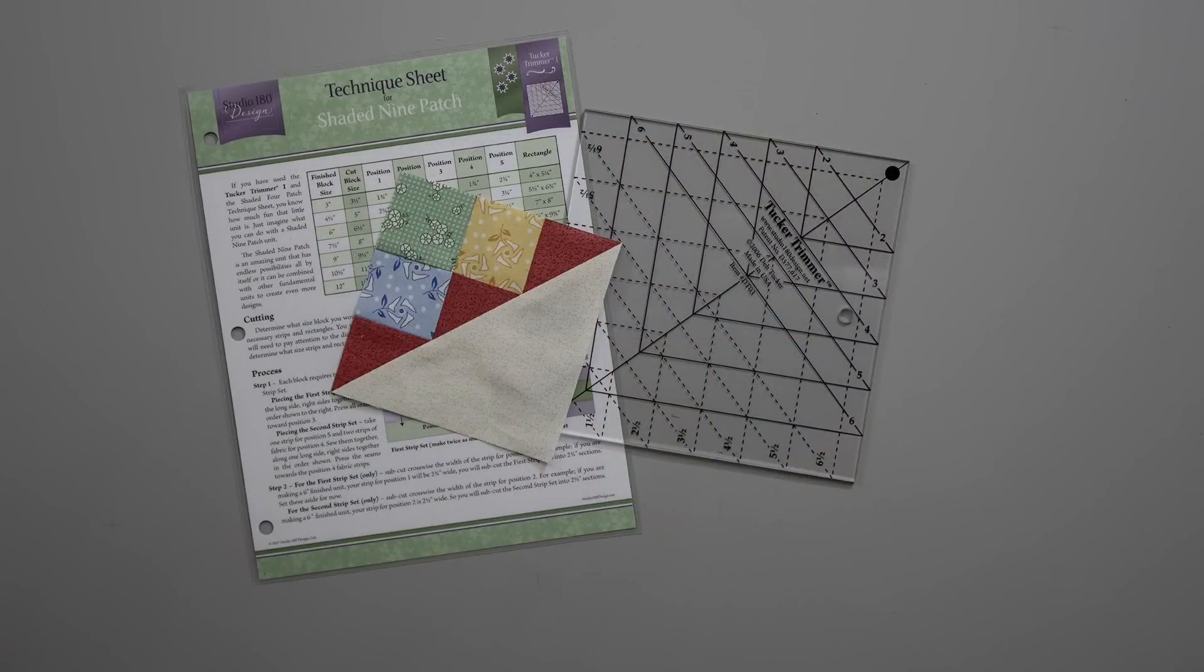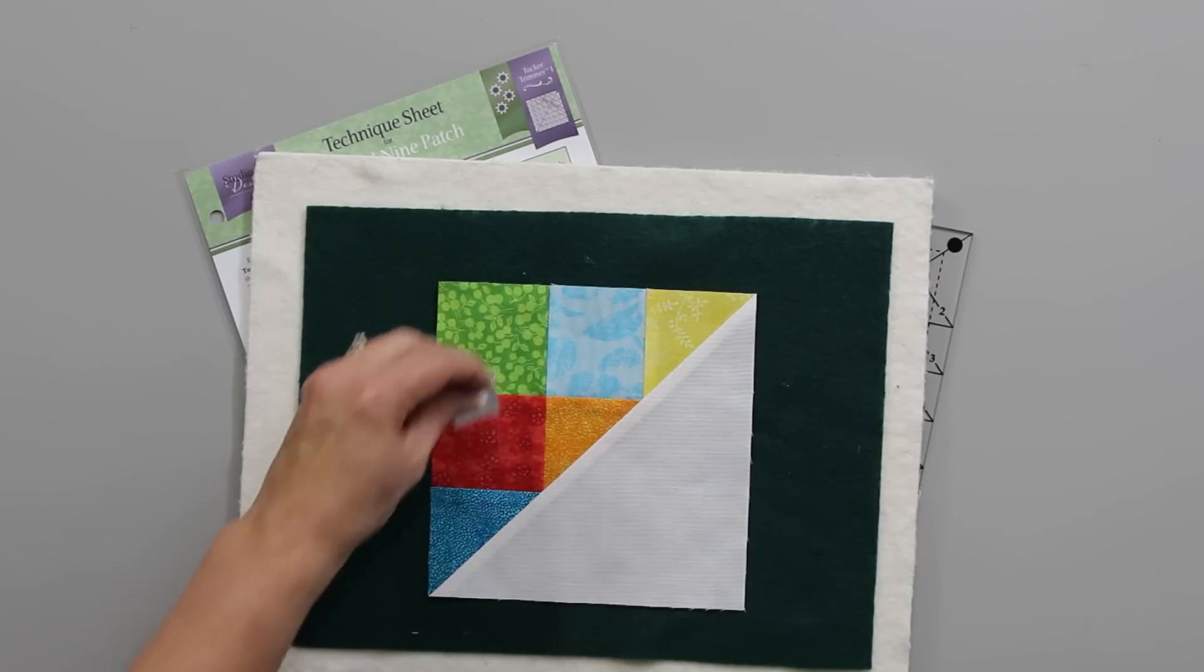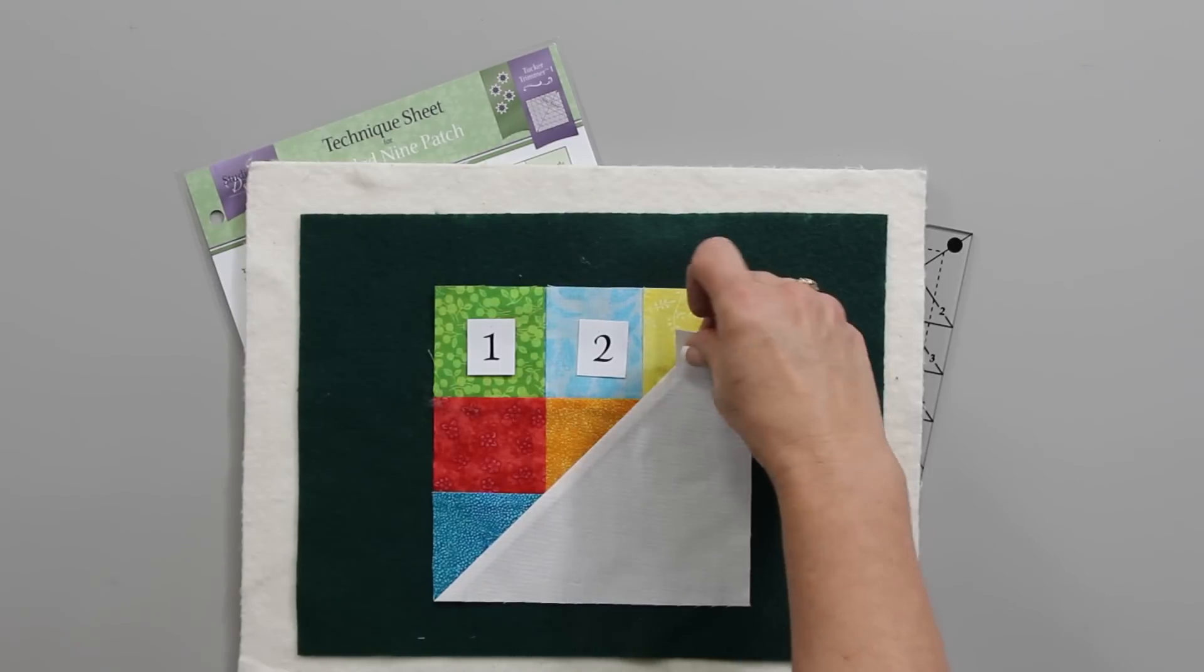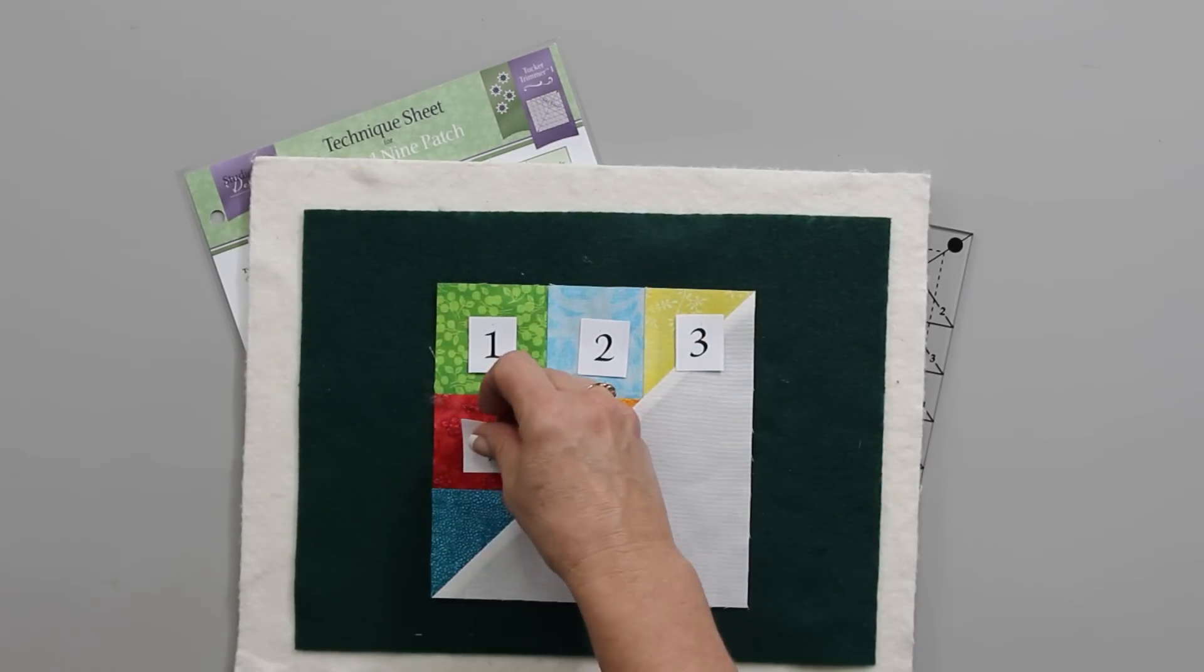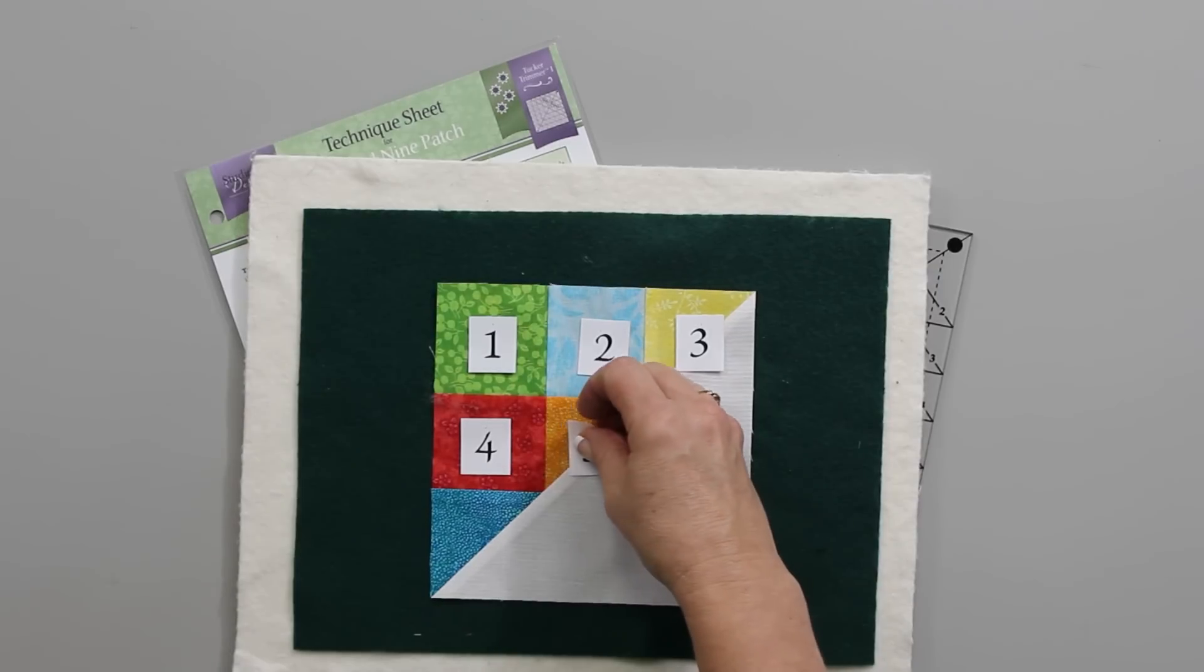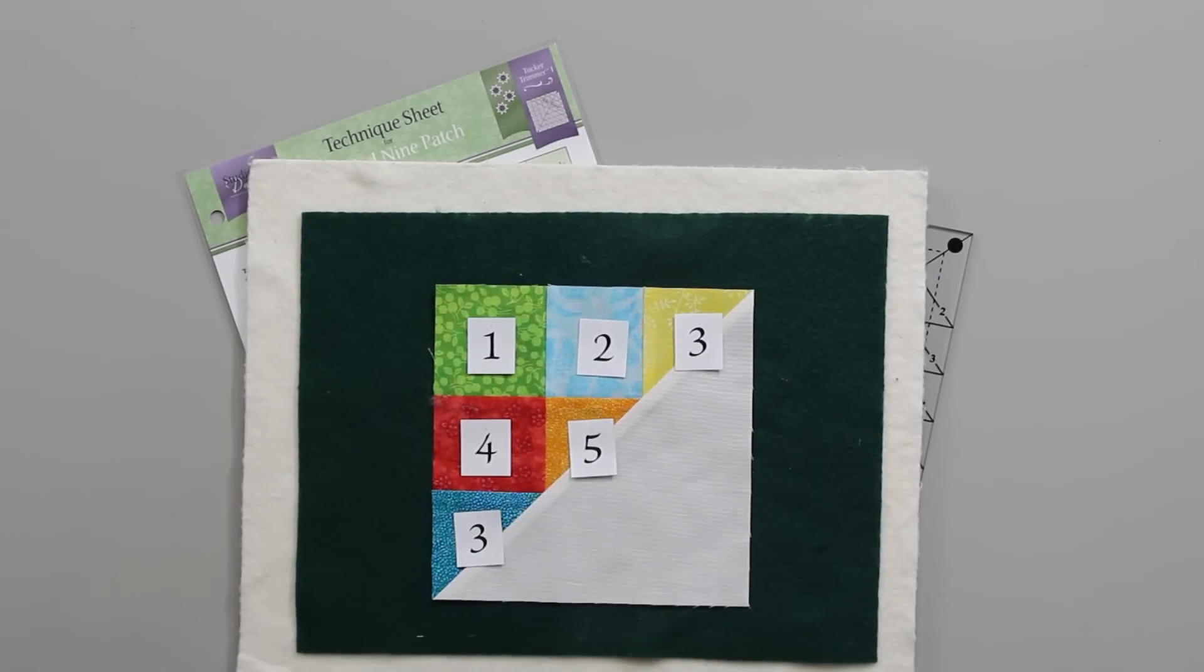The technique sheet has all the information you need. It has a chart with different sizes and a diagram of the Shaded 9 Patch block itself. If it's important that you place your colors in a specific order, the diagram will tell you which strips you cut and where they'll be placed in the particular unit. My suggestion is when you're learning this, just make it scrappy and it'll be a whole lot easier.